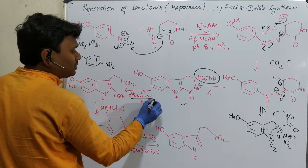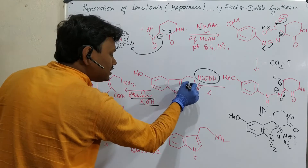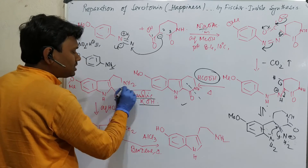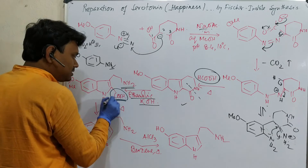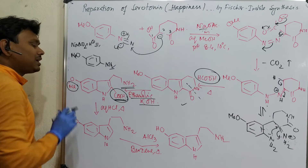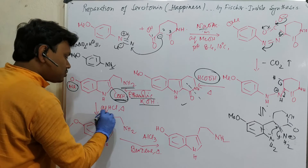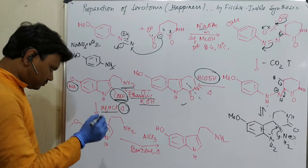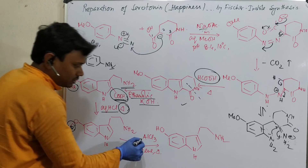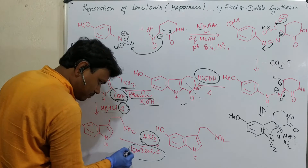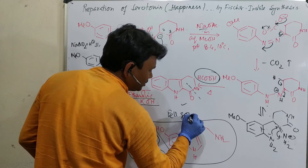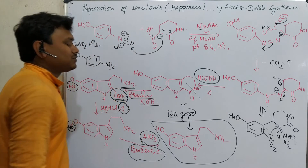In the next step, ethanolic KOH is used in order to hydrolyze the amide bond — it hydrolyzes very easily, giving CO2H and NH2. But these are unwanted groups. Two unwanted groups are present: one is the CO2H and the second is the methyl group. First, it is neutralized with aqueous HCl and heated so that CO2 goes out. Now, for the methyl group still present, AlCl3 is used as a Lewis acid, heated in the presence of benzene — then deprotection happens. And this is our feel-good material — in this way, serotonin is prepared.